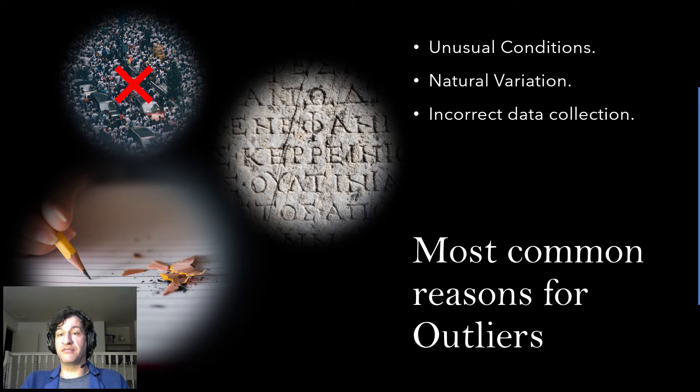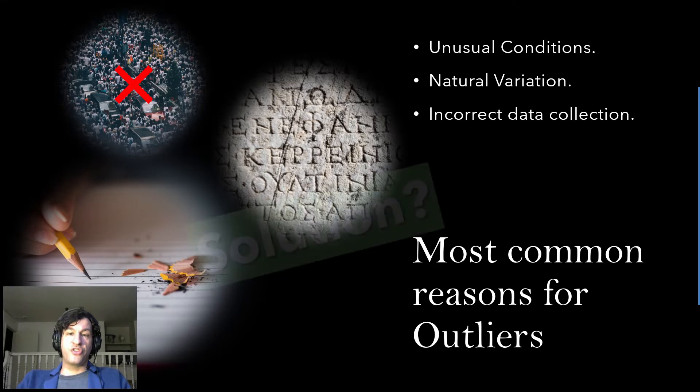Another one, which is the most typical one, in my experience, is incorrect data collection or corrupted data. Even if you have very clean data, it's possible that the data is corrupted, and no cleaning process will tell you that. So what do you do and what is the solution? If you have incorrect data collection, you should definitely remove that data from your data set. That's quite obvious. If you have natural variation, you might not want to remove that data or that outliers because they belong to the system that you're trying to analyze. But if you have unusual conditions, you might want to think if you want to remove them or not, depending on the context of the case.